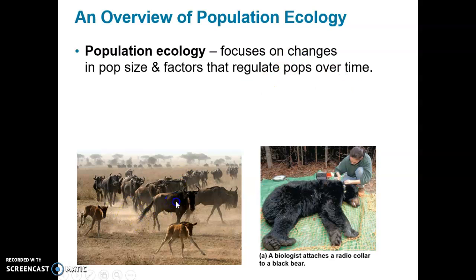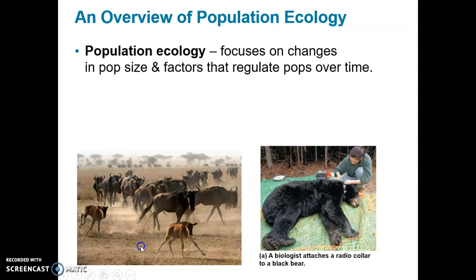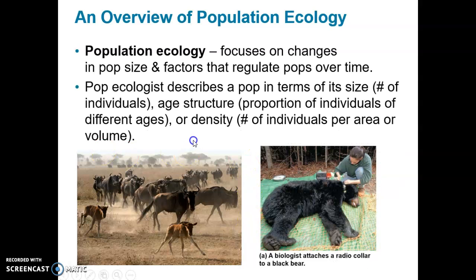Population ecology is the science that focuses on changes in population size — the number of individuals in a population — and the essential factors that regulate those populations over time. Many of those factors are biotic, like the food that animals eat, and some are abiotic, like temperature, available water, or minerals for growing plants.